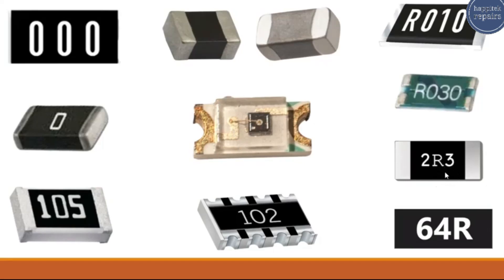This is a standard resistor with a value of 2.3 ohms, and this one equals 64 ohms. When the 'R' appears before or between numbers it means a decimal point. But when 'R' appears after a number, it means ohms — so this is 64 ohms.